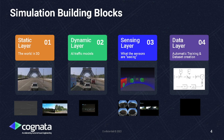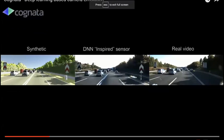Another technique unique to Cognata is a patented technology called the Deep Net Inspired Sensor — it's about how to extend the realism of your sensor. On the right-hand side you can see a real video from the KITTI dataset; on the left is a synthetic implementation of the same scene. We used deep learning to learn how to turn patches from synthetic data to look like real video, so the Deep Net Inspired Sensor looks like the real thing.